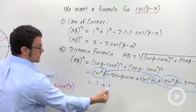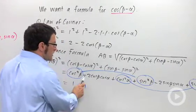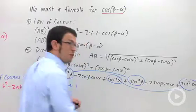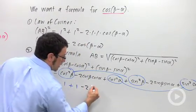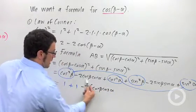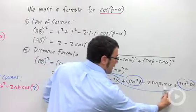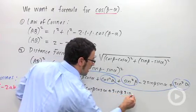So let me write this. Equals 1 plus 1. And then I have the rest of the stuff, the minus 2. Let me observe that both of the remaining terms have a minus 2 in front of them. So I can write minus 2. I can factor that out. And I'll be left with cosine beta cosine alpha, factored out of here. And out of here I'll have a plus sine beta sine alpha.